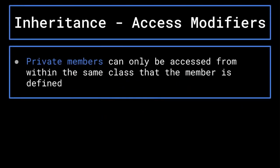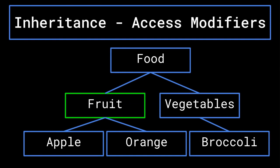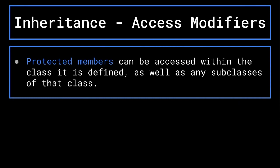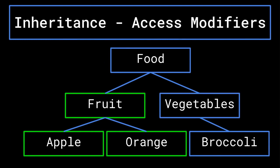Next, we have the private modifier. Private members can only be accessed from within the same class that the member is defined. This is best to use if you do not need this information accessed from anywhere else in the program. Additionally, this allows you to create other private members of the same name in separate classes, which will not conflict with one another due to their private access modifier. We then have the protected modifier. A protected variable can be accessed from within the class it is defined, as well as any subclasses of that class. Essentially, protected variables are private to the class hierarchy that they are defined in.